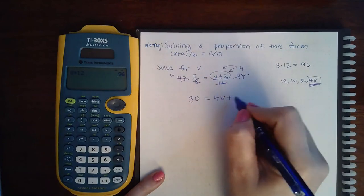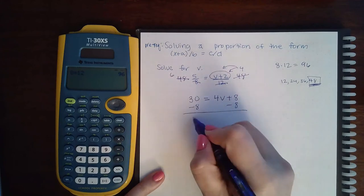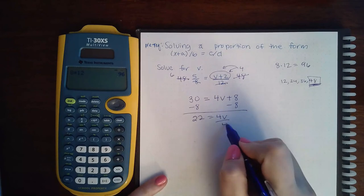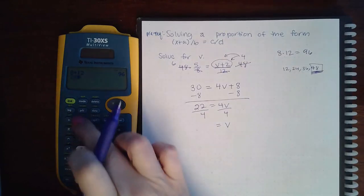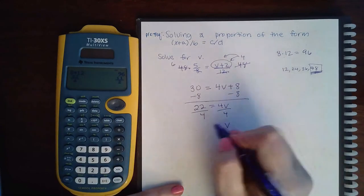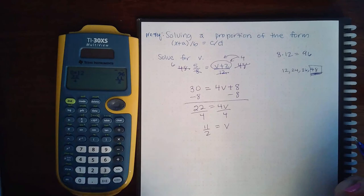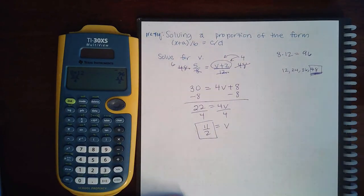Then I can subtract 8 from both sides, giving me 22 = 4v. Then divide by 4 on both sides, and if I type 22/4 in my calculator it reduces down to 11/2. This problem did not ask me to provide a decimal, so just give them the fraction version of the answer.